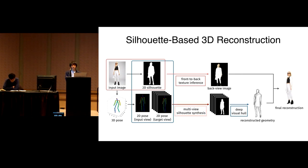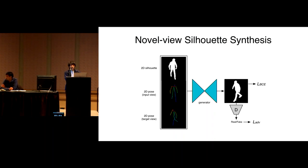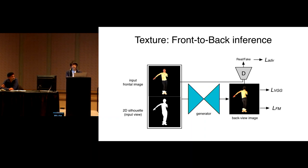The advantages of synthesizing silhouettes instead of RGB images are twofold: silhouette synthesis is a pixel-wise binary classification problem, which trains more stably without extensive hyperparameter tuning; and since we don't store the 3D mesh explicitly, our shape representation is more memory-efficient than voxels. For texture, we infer missing textures by inferring the backside in a pixel-aligned manner using an image-to-image translation network, fully leveraging visible information and covering wider texture variation.